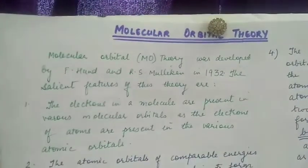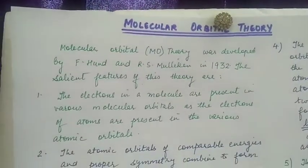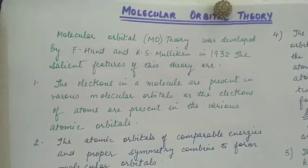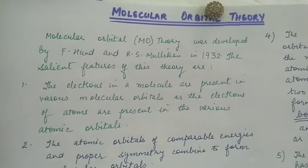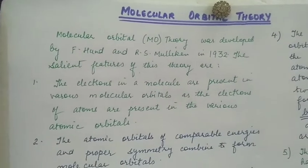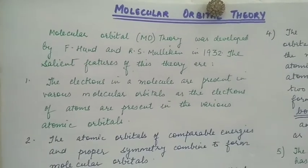Molecular Orbital Theory was developed by F. Hund and R. S. Mulliken in 1932.